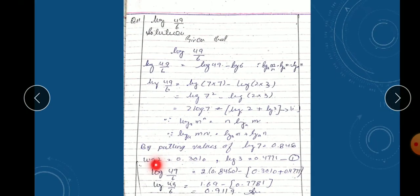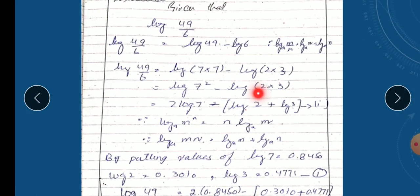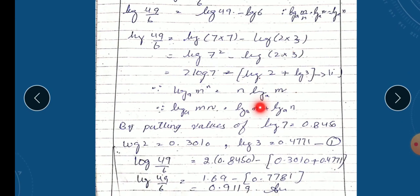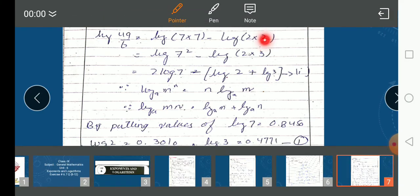Question eleven: log of 49 by 6. Division form. So we have a rule: what do we do? Minus form. Log49 minus log6. Now you have log49. We have to convert to factors of 2, 3, and 7. So 49 is seven times seven. Log6 is two multiplied by three. Log7 square minus log2 times three. When you have power, you get 2log7 minus log2 plus log3. Now put the values: log7 value, log2 value, log3 value. After solving with these three values, the answer is 0.9119.